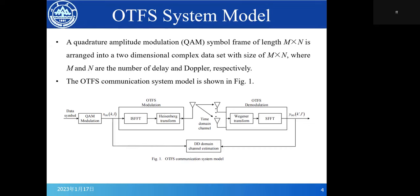Then, let me introduce the OTFS system model. As we can see in Figure 1, the data symbol here must first be modulated by QAM. A QAM symbol frame of length M×N is arranged into a two-dimensional complex data set with size M×N, where M and N are the number of delay and Doppler respectively.